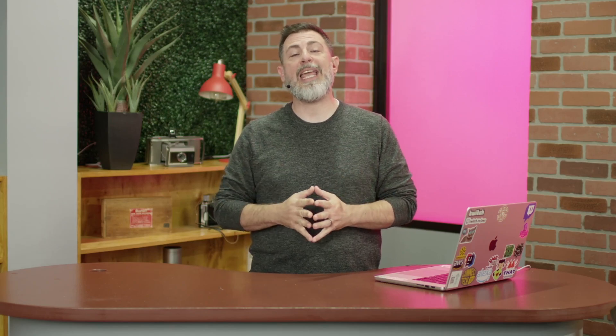Prior to real-time streaming, live streams on Amazon IVS relied on HLS to deliver high-quality video with low latency. Depending on how the Amazon IVS channel is configured and the device and network capabilities of the viewer, HLS is capable of delivering up to 1080p quality video with usually under 5 seconds of latency. For most streams, this much latency is perfectly acceptable.